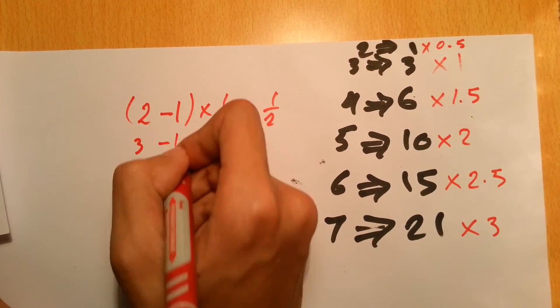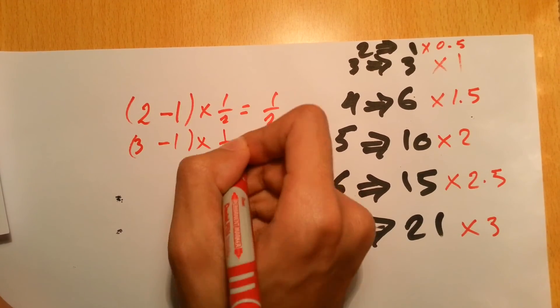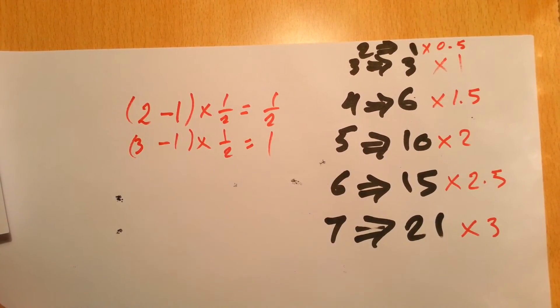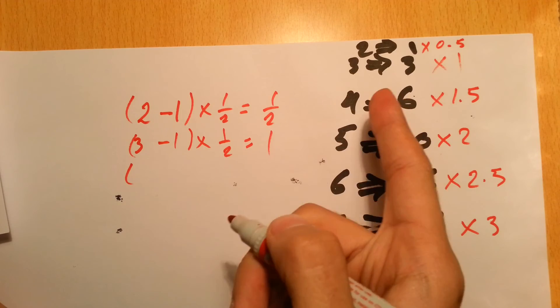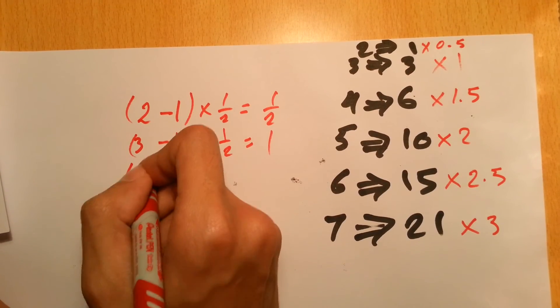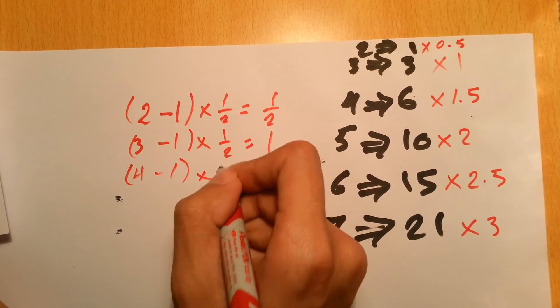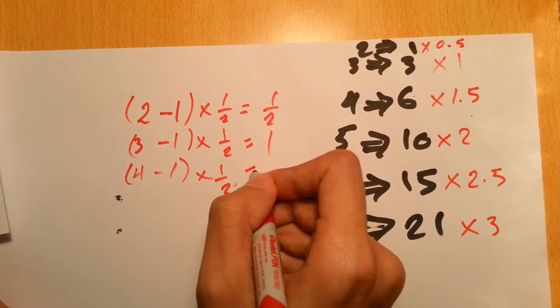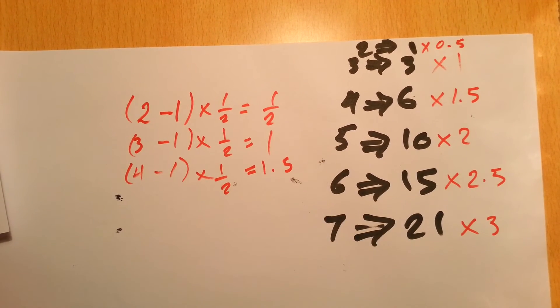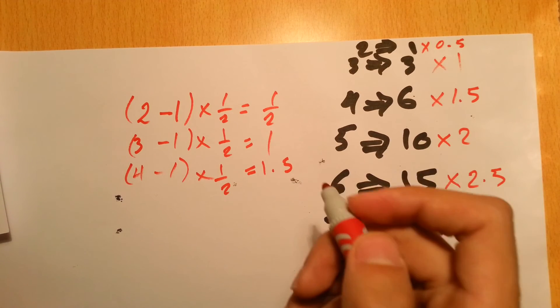What about the three? How do you get one? It's three minus one times half gives you one. What about the four? The one point five from four, you take four minus one times half equals one point five. Three times a half is one point five, so now we can get the equation.